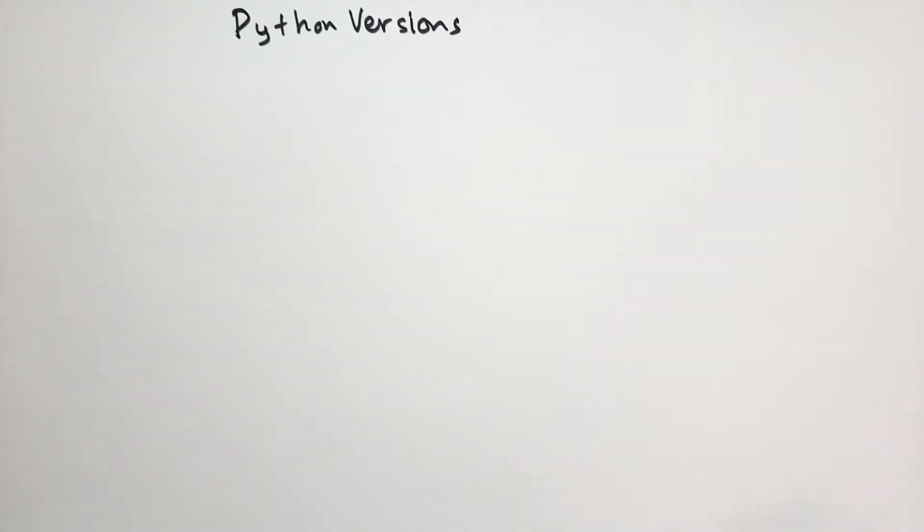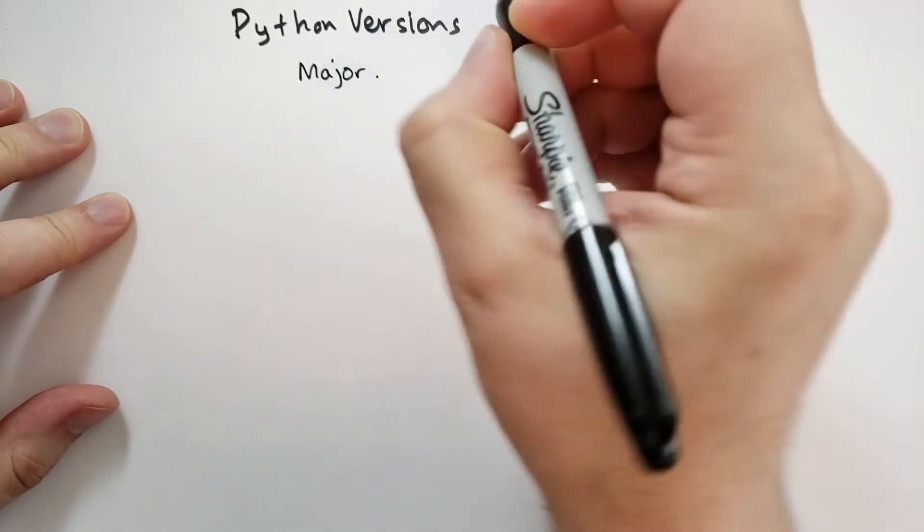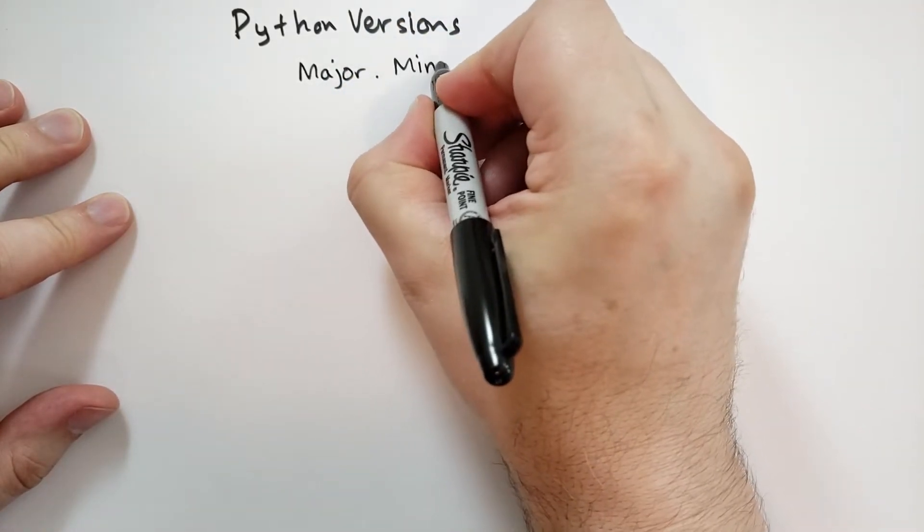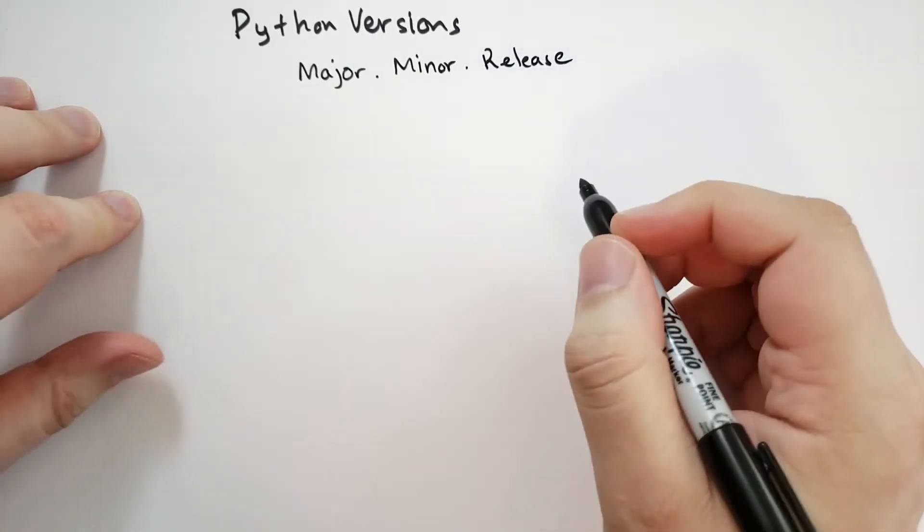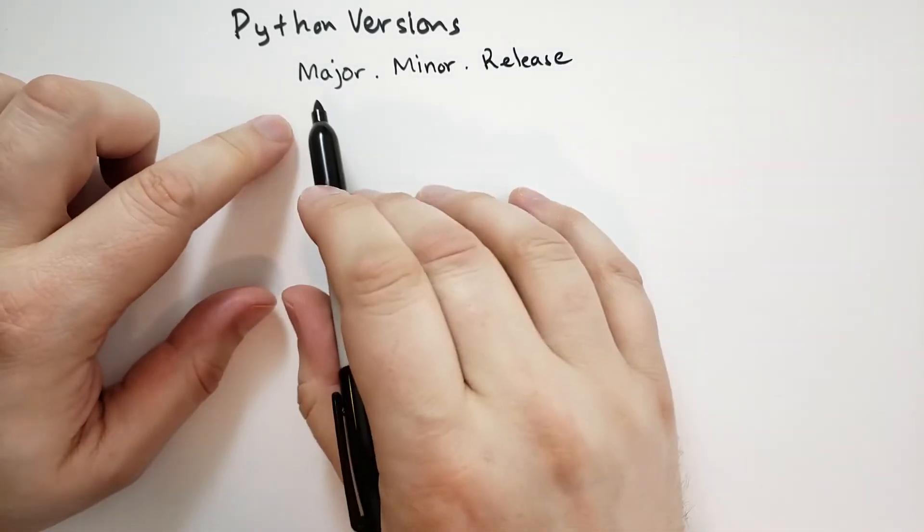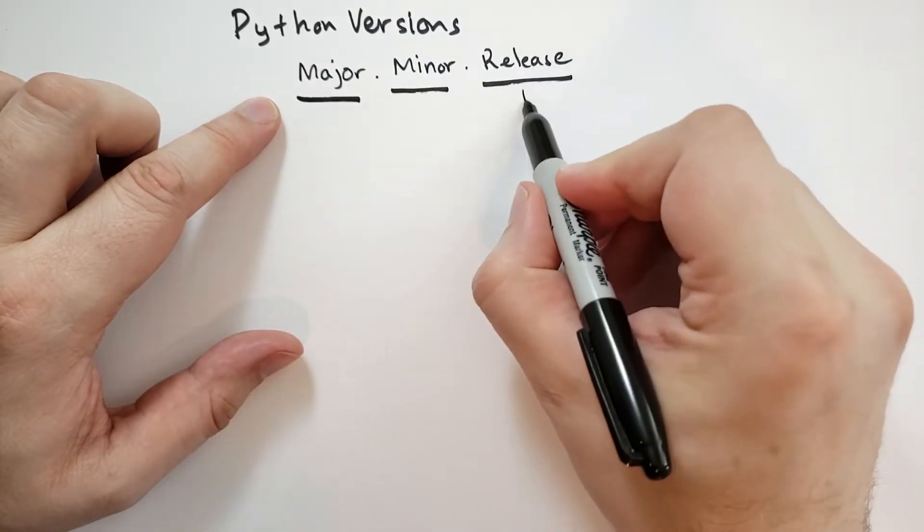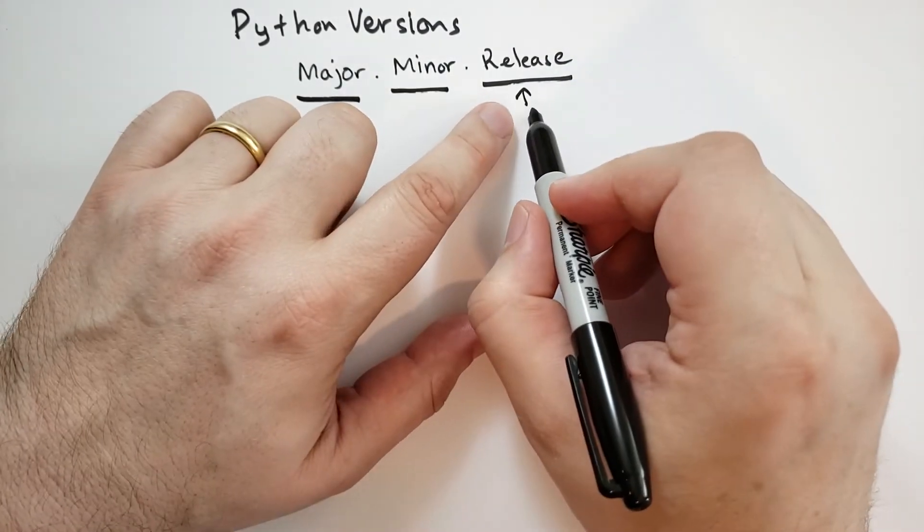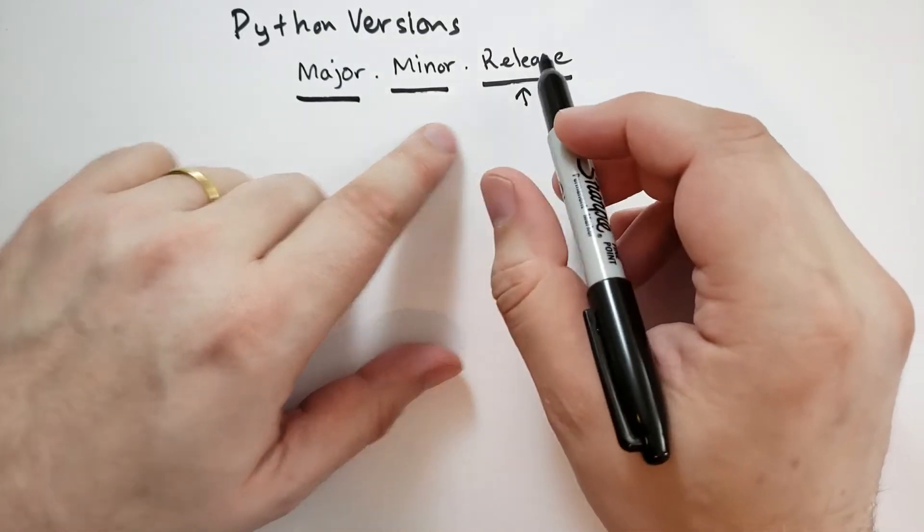A really quick review of the Python versions: you're going to have a major version number, dot a minor version number, and then you're going to have a release number. Python has been pretty good about following the paradigm for this thing. So when the release number increments, that's just another release, usually just bug fixes and small minor tweaks that are always backwards compatible.